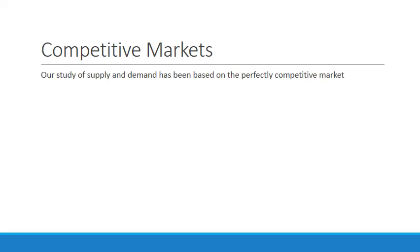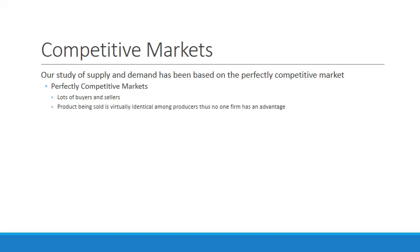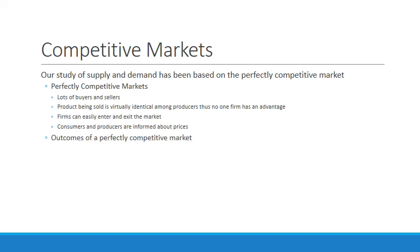Our supply and demand has been based on a perfectly competitive market. Perfectly competitive markets have certain characteristics: there are lots of buyers and sellers, the product being sold is virtually identical among producers so no one firm has an advantage, firms can easily enter and exit the market, and consumers and producers are informed about prices. The object bought and sold is identical — corn is corn — firms can get in and out as easily as they want, and everyone understands what the price is.